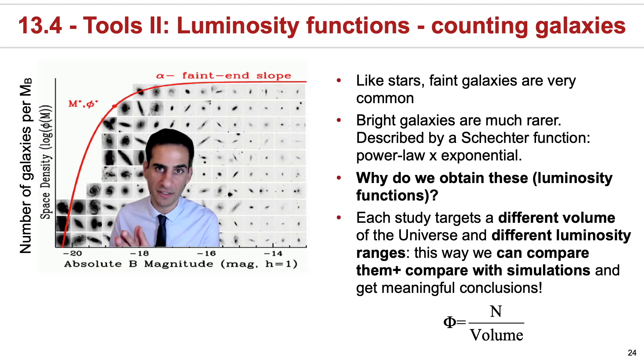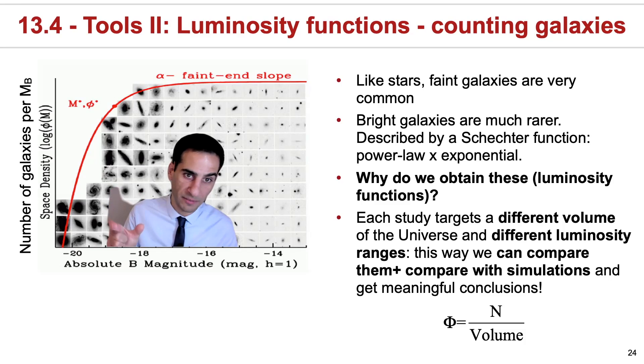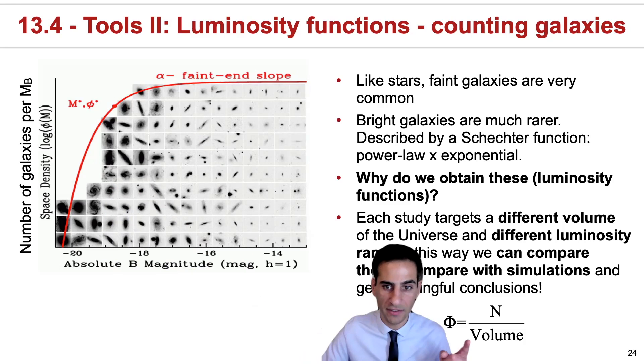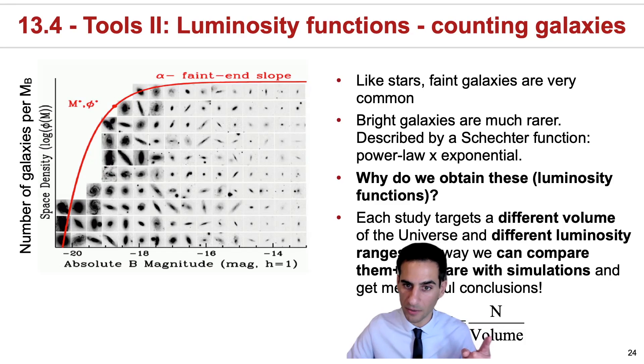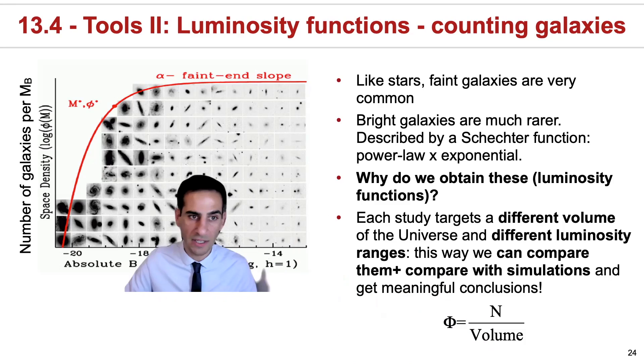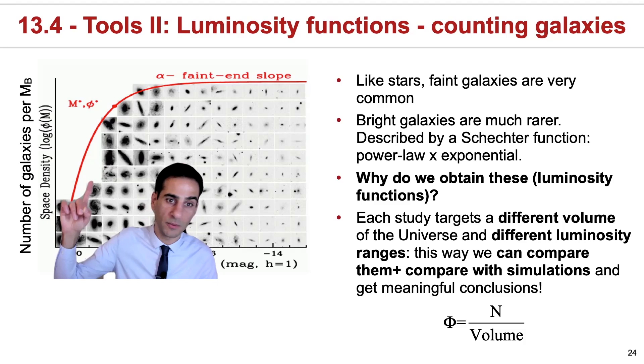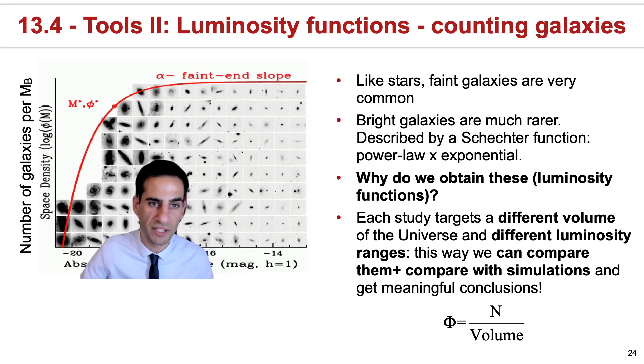The way that you obtain a luminosity function for galaxies is relatively simple. Essentially, for every single band of absolute magnitude, you count how many galaxies you find and also divide by the volume that you search those galaxies in. This is how you would obtain data points within this curve, and then you can fit that curve with a Schechter function.